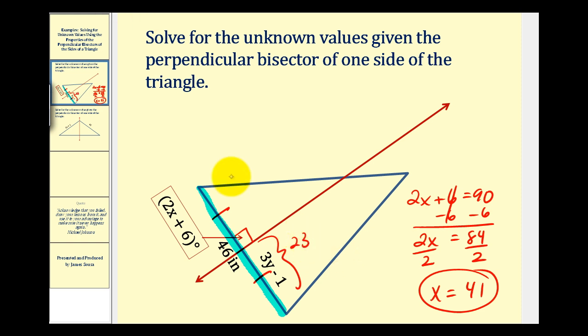And that's all we need to determine the value of y. We know that 3y minus 1 must equal 23. So we add 1 to both sides, we'll have 3y, that's 0, equals 24, divide both sides by 3.